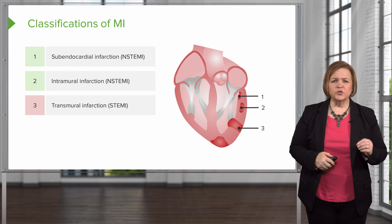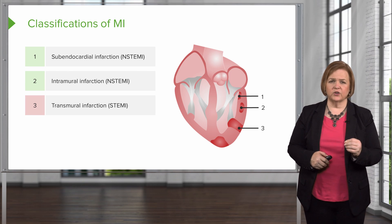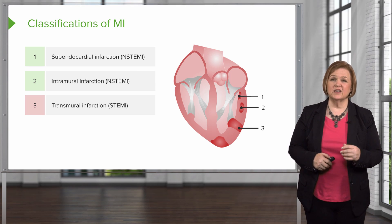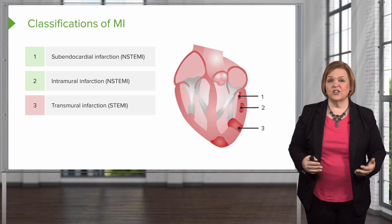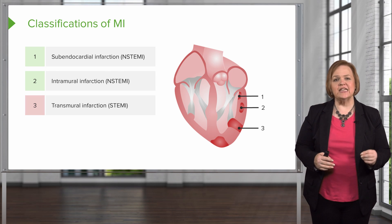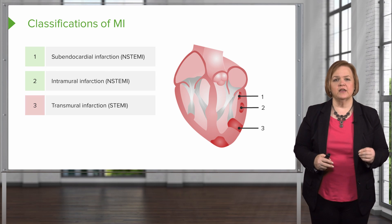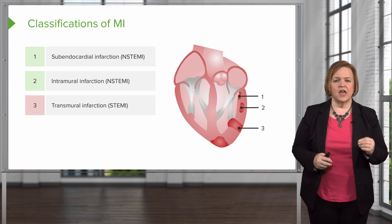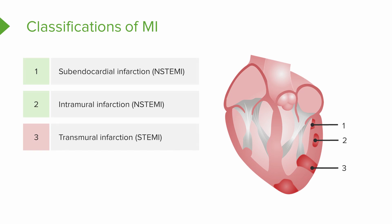Number three shows you a transmural infarction. This one is the most serious and has the highest risk of complications. That is a STEMI — an ST-segment elevated MI — and it goes all the way through. You may hear people refer to it as a transmural infarction or a STEMI; they're the same thing.